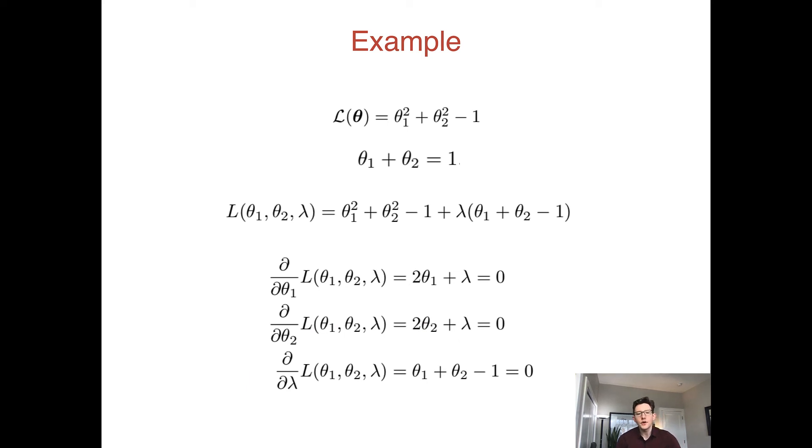It's worth noting, let's imagine the case where we just wanted to optimize this without taking the Lagrangian. If we took the derivative with respect to θ₁ and θ₂ without this Lagrangian term, it would tell us that our derivative is always positive, and in fact it's more positive the more positive we make our values, which would tell us we should just always decrease our θ₁ and θ₂ and that we just want them to be zero.